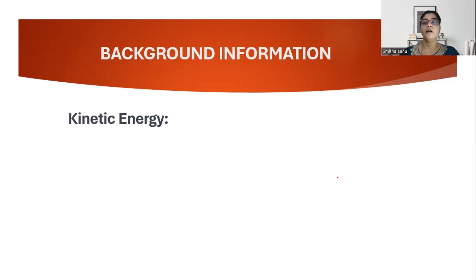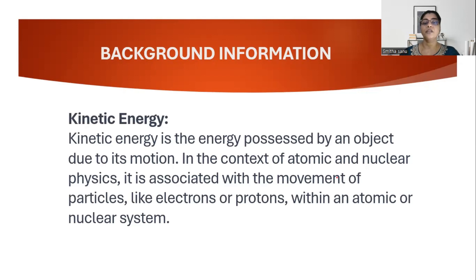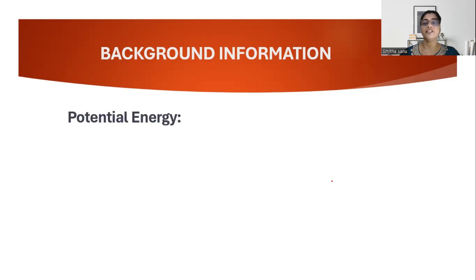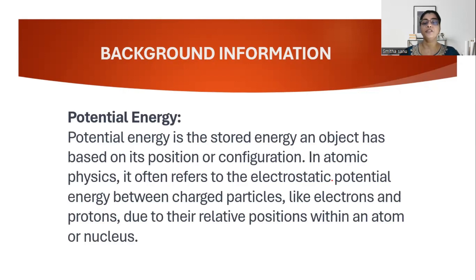A moving alpha particle will have kinetic energy — the energy possessed by an object on account of its motion. In atomic and nuclear physics, this describes the movement of particles like protons, neutrons, and electrons within an atom or nuclear system. Next is potential energy, which arises from the position and configuration of an object. In atomic physics, it refers to the electrostatic potential between two charges — a positively charged alpha particle and a positively charged gold nucleus will have electrostatic potential energy based on their relative position with respect to the nucleus.